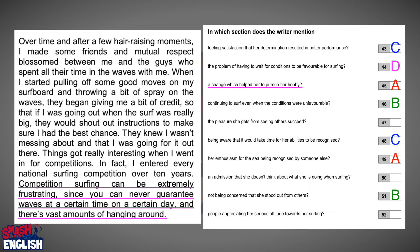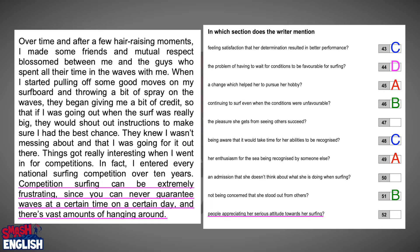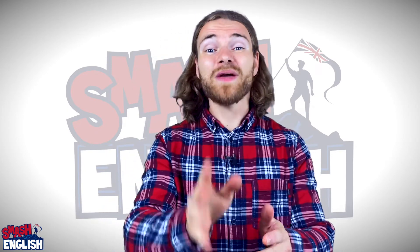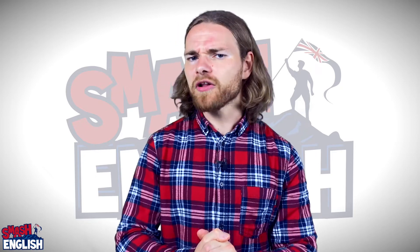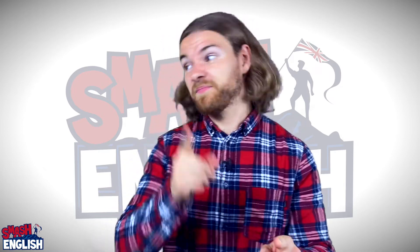"A change which helped her pursue her hobby" — no. "Continuing to surf even when conditions were unfavourable" — nothing better than B. "The pleasure she gets from seeing others succeed" — nope. "Being aware that it would take time for her abilities to be recognised" — nope. "Her enthusiasm for the sea being recognised by someone else" — no. "An admission that she does not think about what she is doing when surfing" — no. "Not being concerned that she stood out from others" — no. "People appreciating her serious attitude towards her surfing" — yes! She states mutual respect blossomed between her and the guys who spent all their time in the waves with her. So D is our answer here. We have read four paragraphs and have eight answers completed — that means in our final paragraph, paragraph E, we should be able to find the two remaining answers.